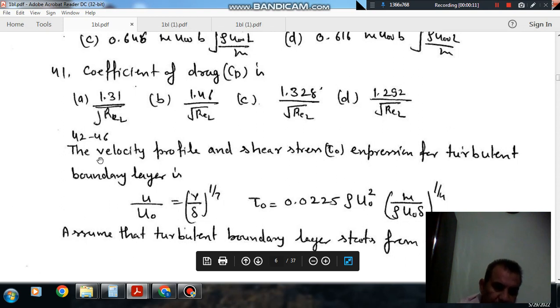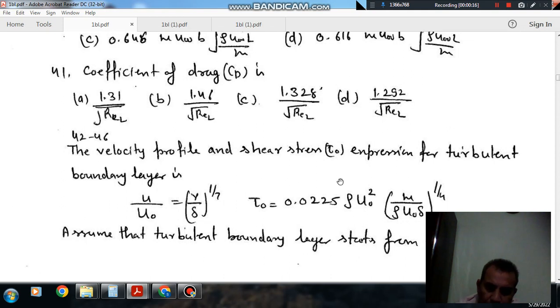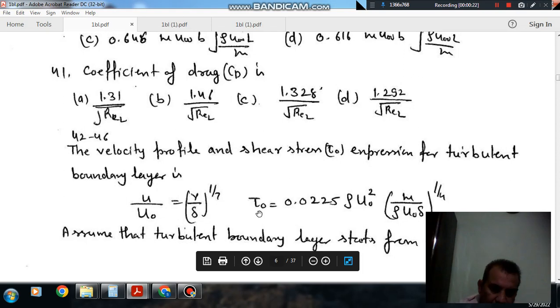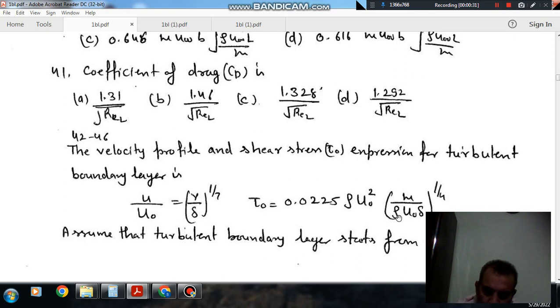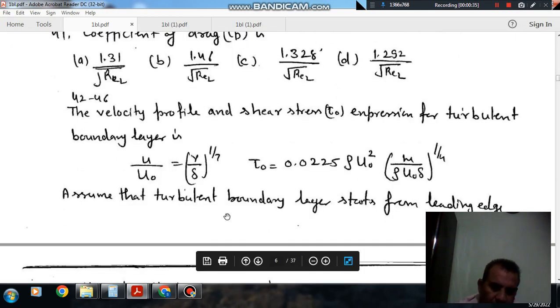Question number 4246 carries a common statement. The velocity profile and shear stress tau_0 expression for turbulent boundary layer is equal to 0.0225 rho u_0 squared, mu rho u_0 delta raised power 1 by 4. Assume that the turbulent boundary layer starts from leading edge.